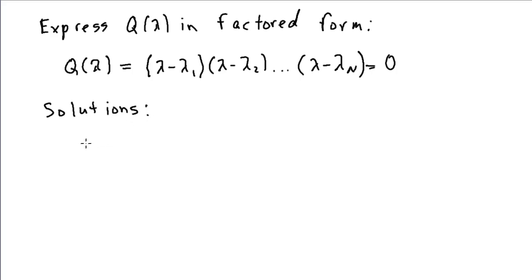I get, for possible y0 of t functions, c1 e to the lambda 1 t, c2 e to the lambda 2 t. I'll get n possible solutions here of this form.